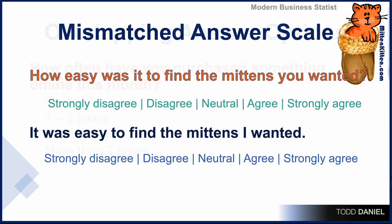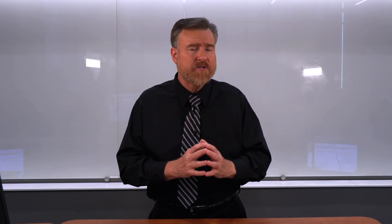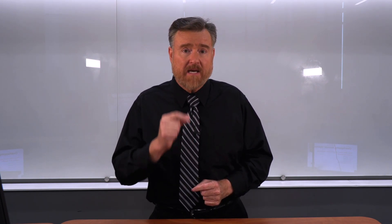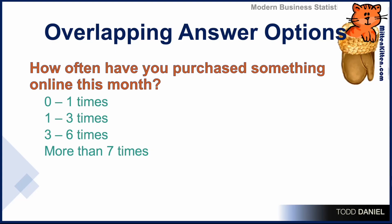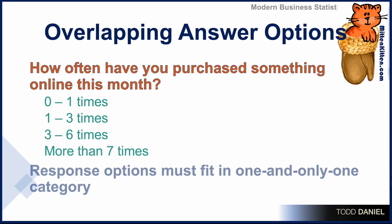Be careful too, as you're constructing your answer options, that the options don't overlap. You want people to be in one and only one category. Overlapping answer options occur when you ask something like, how often have you purchased something online this month? And the answer options are zero to one, one to three, three to six, and more than seven. If you had purchased three times, which category are you in? The response options must fit in one and only one response category.